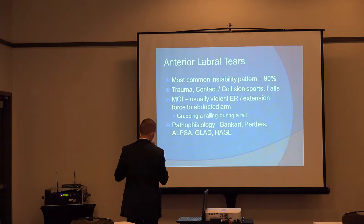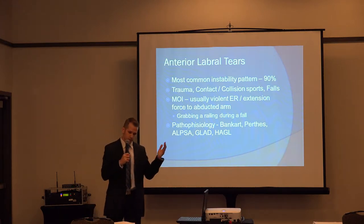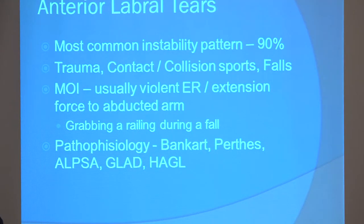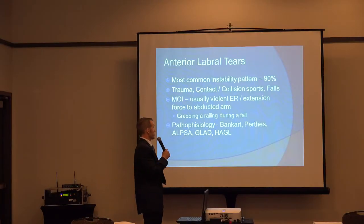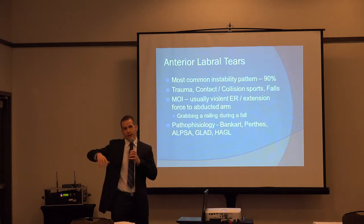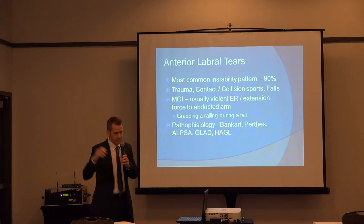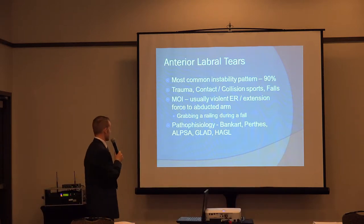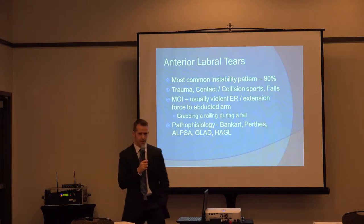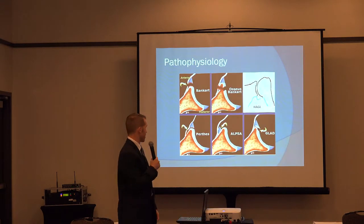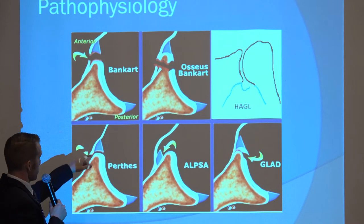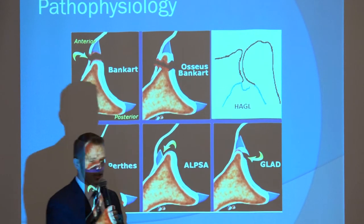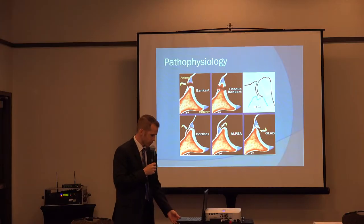There are three different types of labral tears — anterior, posterior, or SLAP tears — though oftentimes they're combined. Anterior labral tears occur with the most common type of instability pattern, which is anterior dislocation. Over 90% of dislocations occur anteriorly, typically resulting from trauma, contact or collision sports, and falls — that same mechanism of external rotation, abduction, and arm extension. The pathology usually occurs either off of the glenoid, in various forms of labral pathology, or off of the humeral side, which is called a HAGL lesion.